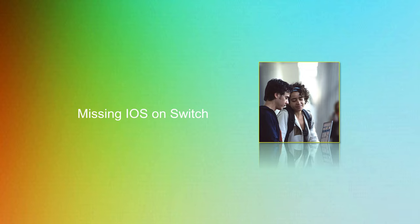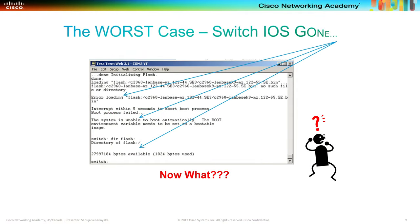Now let's discuss a worst-case scenario — the switch has no IOS at all; the IOS is completely gone. If the switch is still running in this situation, please do not power it down. The best option is to use a TFTP server to download a new Cisco IOS image to the switch and load it as the default IOS version. Do not power off the switch; instead access your TFTP server from the switch, download the image, and use it as the default IOS.